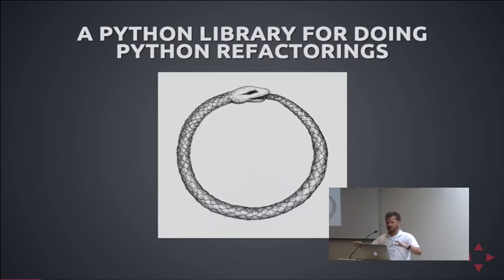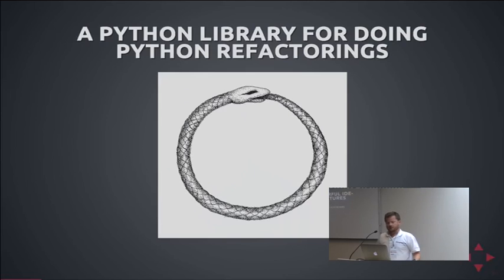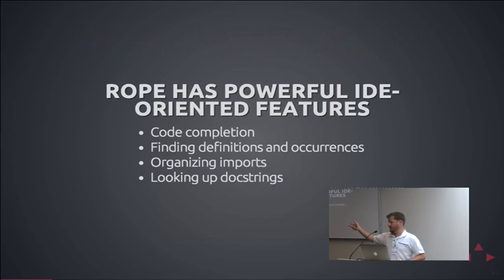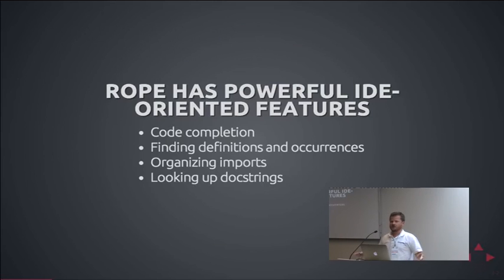I didn't write Rope — Rope exists independently. I've never met the people who do it, but they're very bright because it does a really hard job refactoring Python, since Python is so dynamic. Rope has a lot of powerful IDE-oriented features like code completion, finding definitions and occurrences — things which aren't actually refactoring, just things Rope is also able to do. Organizing imports, looking up doc strings, et cetera.